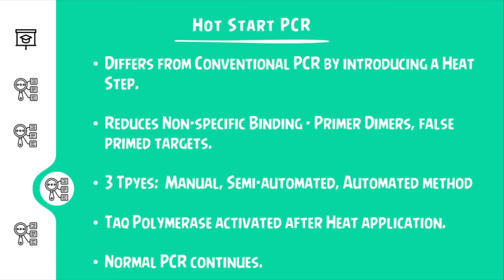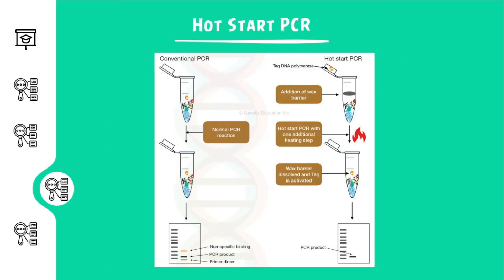In a manual method, all essential components of the reaction mixture are added only after heating it to elevated temperatures. In a semi-automated method, the primers, buffers, and dNTPs are mixed together at room temperature at the bottom of the PCR tube, which is then separated from the other components using melted wax like AmpliWax PCR gems. When the wax layer melts upon heating during the denaturation step, it mixes the two layers allowing a fully active reaction to occur.